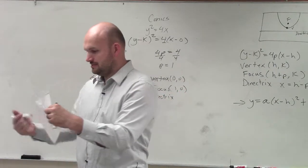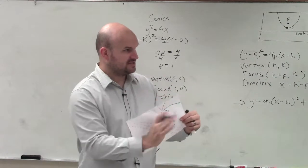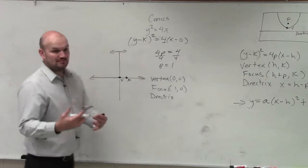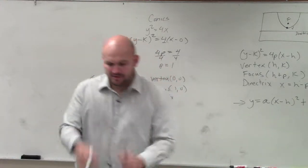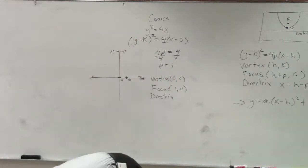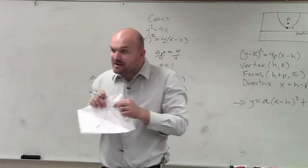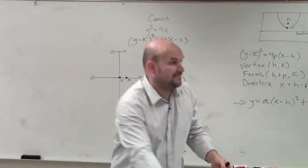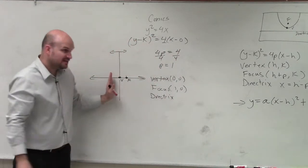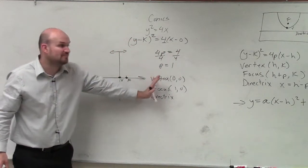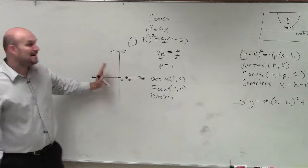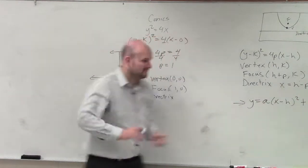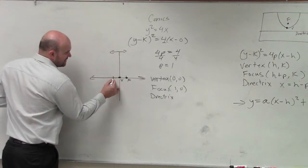But do you guys notice how your directrix is kind of like perpendicular to your line of symmetry? Here's your line of symmetry of your parabola. Your directrix is kind of perpendicular. And also, your vertex is halfway between your focus and your directrix. So if I'm going one distance p to get to my focus, that means I need to go p in the opposite direction, hence why it's h opposite of p. So I go in the opposite direction to give us the directrix.